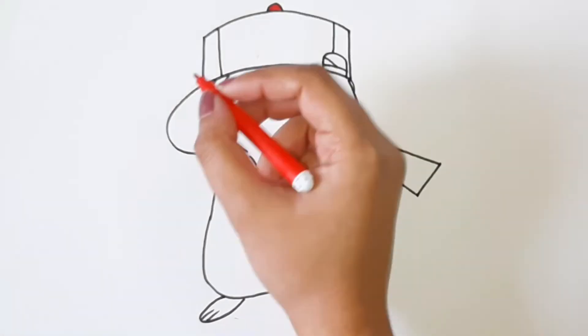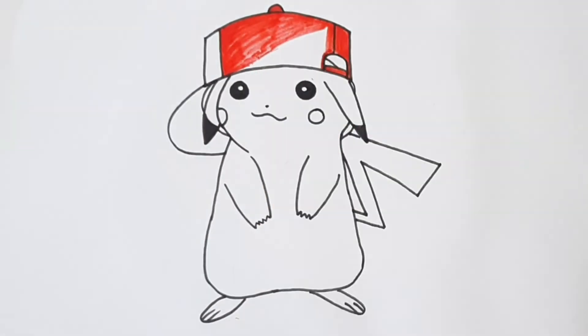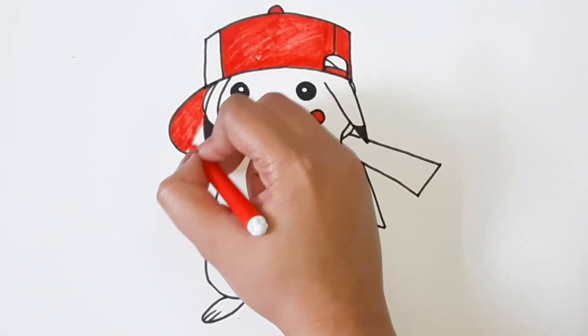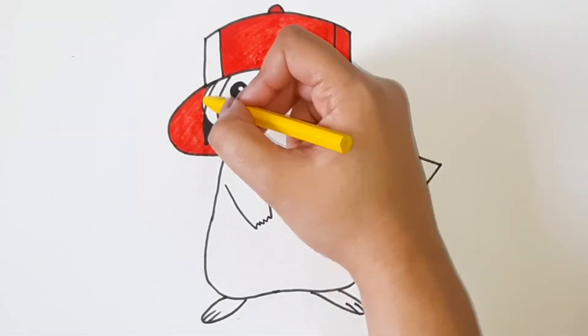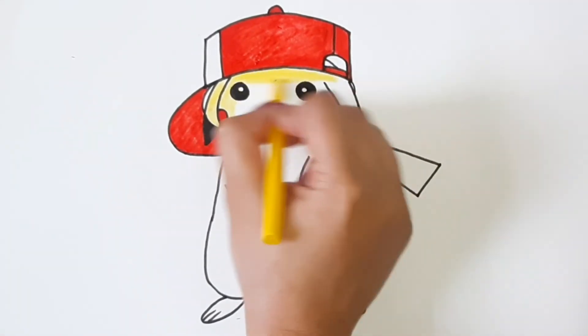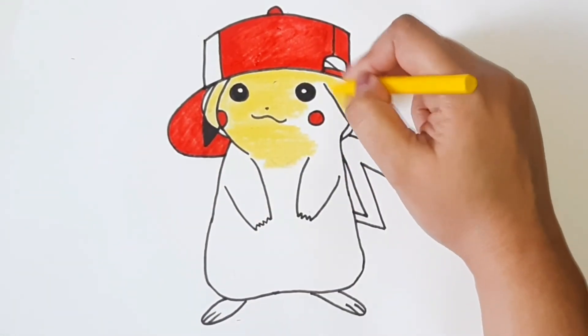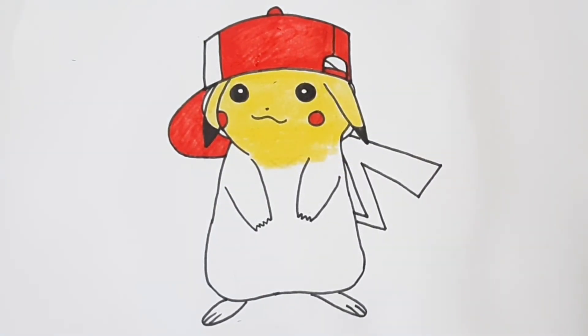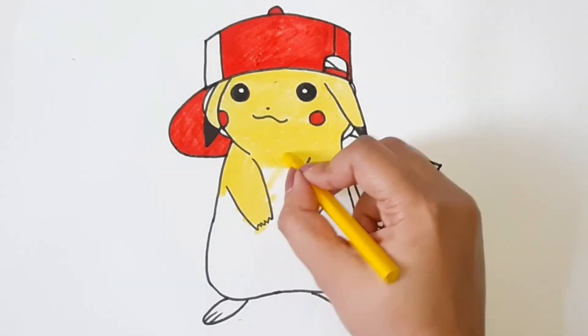It's time for coloring. So take out your red sketch pen and color the cap and also the circle around his cheek. And then grab a yellow crayon and then color the rest of the body. And after filling the yellow color in the body, we will also get some detailing with yellow sketch pen.